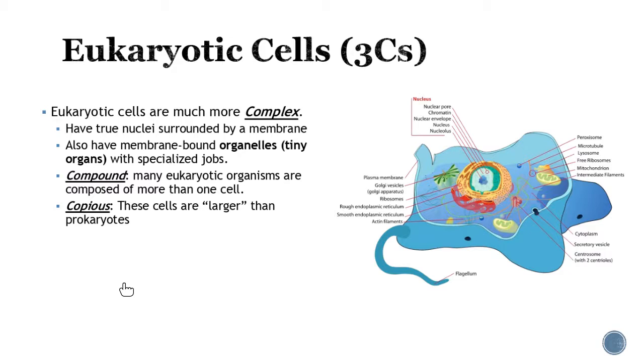They're going to have that true nuclei, your nucleus surrounded by the nuclear membrane, and also membrane-bound organelles. Think of these as tiny little organs that all had specific jobs. All these little organelles had specific things, which allowed the cells to get more complex. They're also more compound. You're going to see when we start talking about these eukaryotes we're allowed to become organisms composed of more than one cell.